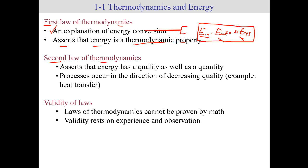But it's not sufficient just to know the first law. There's also a second law of thermodynamics. The second law of thermodynamics asserts that energy has a quality as well as a quantity. That means that how much of the energy, like let's say I have a certain amount of energy in one form and I want to convert it to another, how much of the energy is actually convertible? How much energy can I convert based on the process, based on efficiency and everything? And it also basically asserts that processes occur in a direction of decreasing quality. For example, heat transfer. Heat transfer goes from hot to cold. It doesn't go from cold to hot. That's what the second law helps qualify.